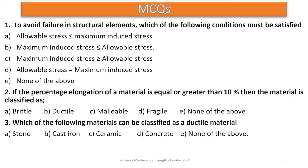From question one, it says: to avoid failure in structural elements, which of the following conditions must be satisfied? The correct answer is B — your maximum induced stress should be less than or equal to the allowable stress, so that your member will not fail.